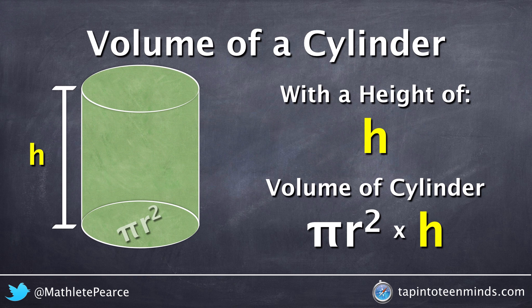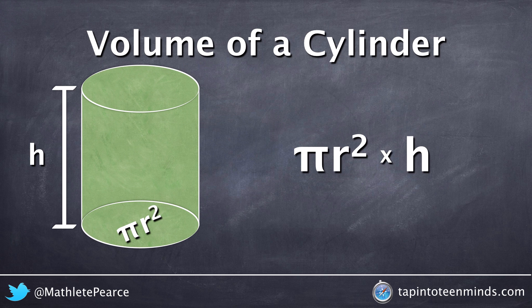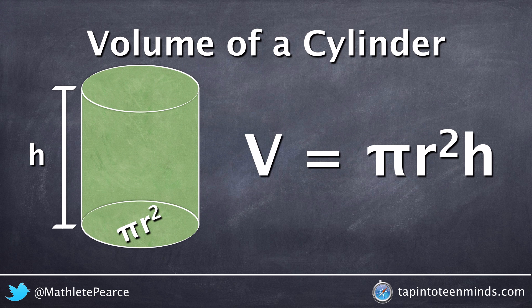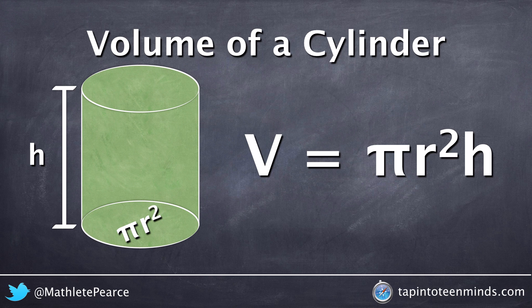So our volume of a cylinder formula is actually the area of the base, which is pi r squared for our area of a circle. And then we simply multiply it by how tall the cylinder is. So we end up with a volume of pi r squared times h for the volume of our cylinder.